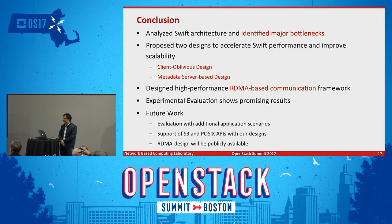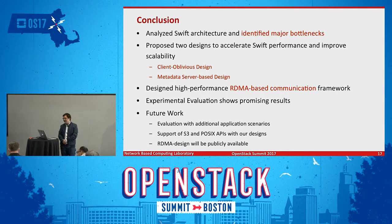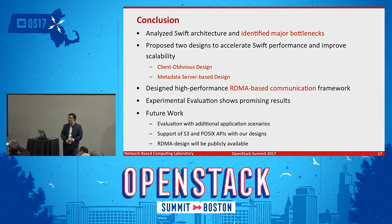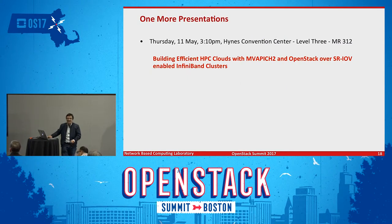To conclude: we analyzed Swift architecture and identified the major bottlenecks. We proposed two designs to accelerate Swift performance and improve scalability. Design one (client oblivious) is suitable if you don't want to change your application. Design two is better if you care more about performance. We designed an RDMA-based communication framework for Swift, and the evaluation results look very promising. Future work includes evaluating more application scenarios and supporting S3 and POSIX APIs. The design will be available soon on our website.